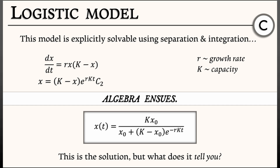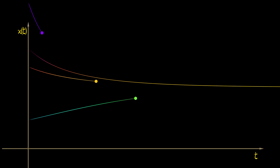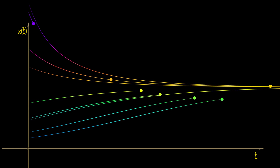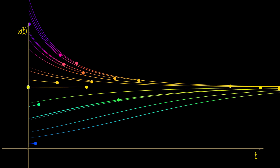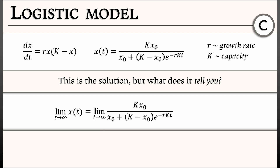This is the solution. But what does it really tell us about the system? We could try drawing some pictures — pick an initial condition x0, assume some explicit positive values for k and r, look at the graph, and maybe try a couple of different initial conditions. The figures suggest that things seem to be converging to some value. So we could try taking the limit as t goes to infinity of x(t), which is the limit of k*x0 over x0 plus (k minus x0) times e to the minus rkt.